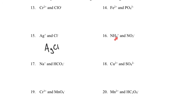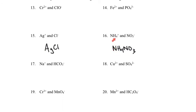Looking at number 16, we have an NH4 plus one ion — that's ammonium — and an NO3 negative one ion — that's nitrate. Plus one and minus one balance, so you just need one of each. The formula is NH4NO3, called ammonium nitrate. You might remember there was a big explosion in Beirut, Lebanon — a storage facility full of ammonium nitrate. These are polyatomic ions, meaning more than one type of atom, whereas the ones like silver and chloride are monatomic — just one atom.